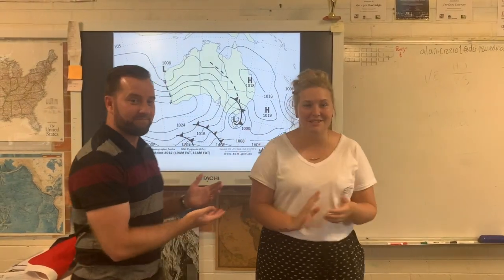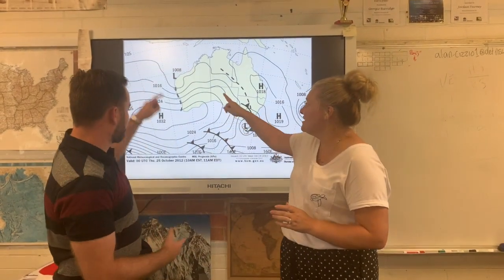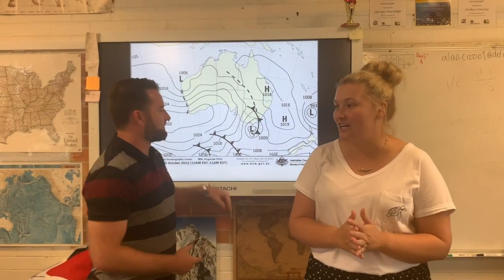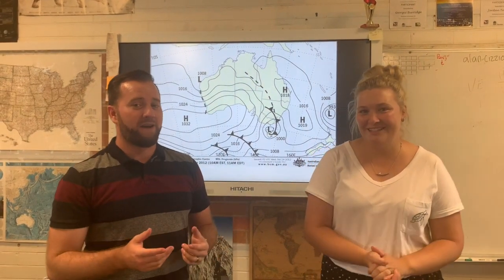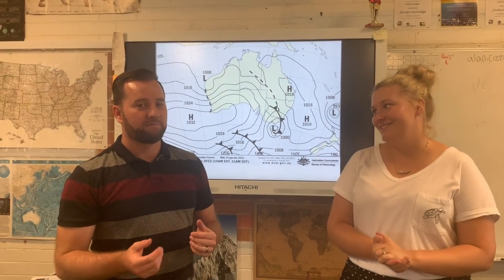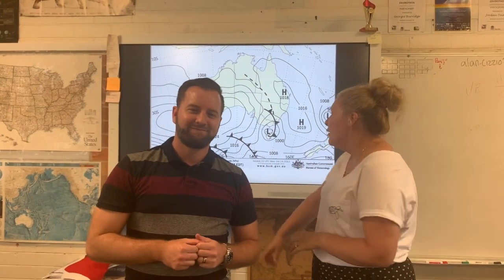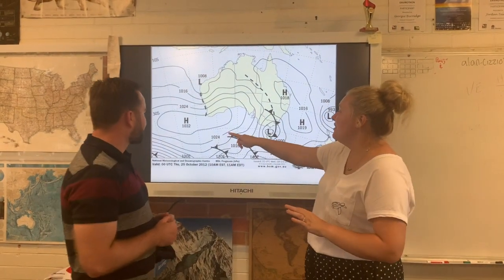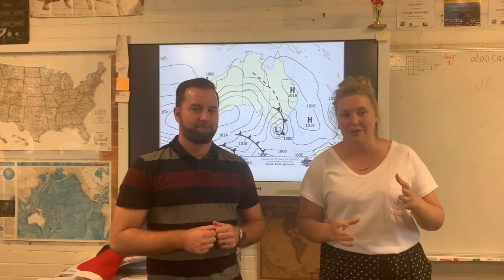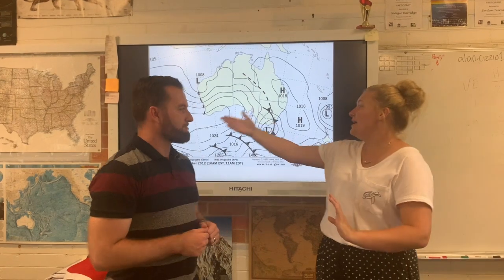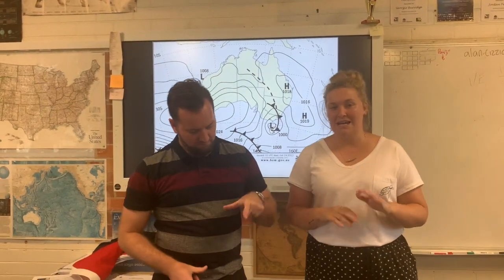We're back in front of our synoptic chart that we looked at last week. Quick revision — we know that these are called our isobars and they connect areas of equal barometric pressure, and that's measured in hectopascals.